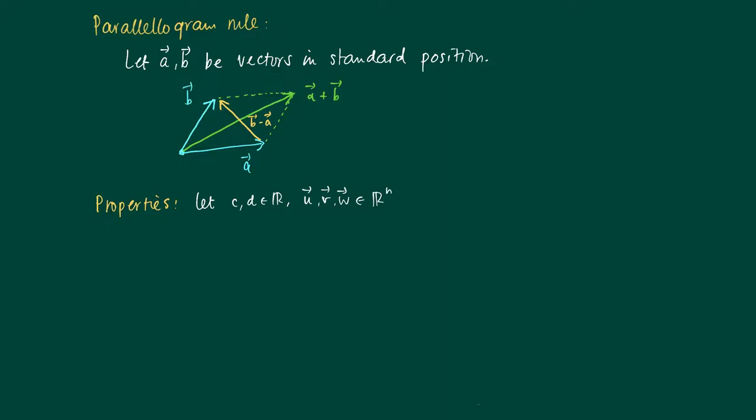Well, what general properties do we have for vectors? Suppose we have two scalars c and d and three vectors u, v, and w. First of all, an algebraic property is seen in the parallelogram rule: adding v to u is the same as adding u to v. So basically the order of addition does not matter.